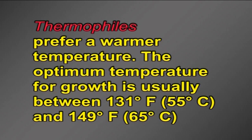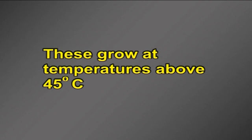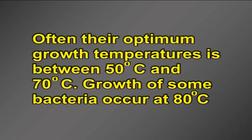Thermophiles prefer a warmer temperature. The optimum temperature for growth is usually between 131 degrees Fahrenheit (55 degrees Celsius) and 149 degrees Fahrenheit (65 degrees Celsius). Some can grow in temperatures as low as 95 degrees Fahrenheit (35 degrees Celsius) or as high as 167 to 194 degrees Fahrenheit (75 to 90 degrees Celsius). These grow at temperatures above 45 degrees Celsius, with optimum growth between 50 and 70 degrees Celsius. Growth of some bacteria occurs at 80 degrees Celsius.